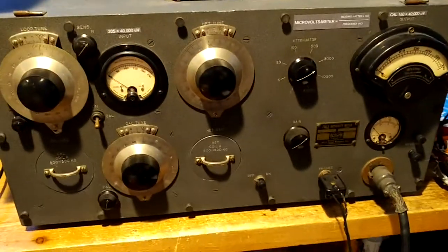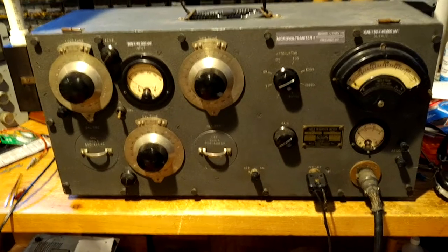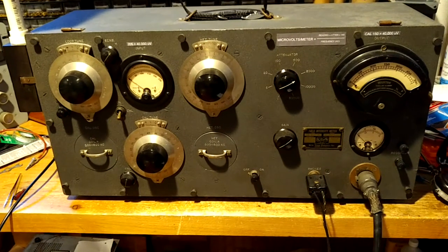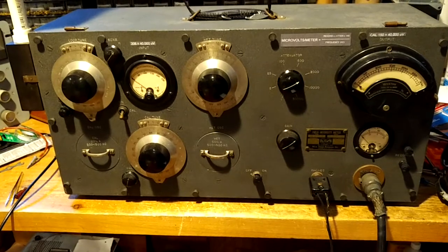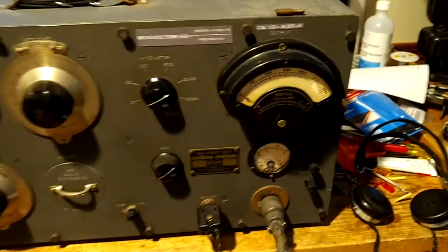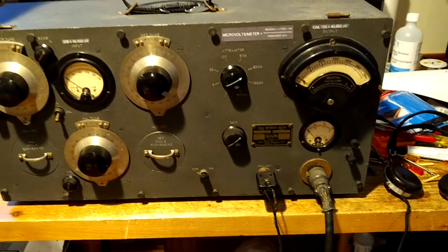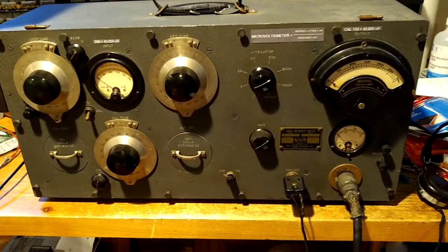The actual unit is a six-tube superheterodyne receiver. The IF frequency is 300 kilocycles, and there's a diode detector and a linear reading output meter that measures the voltage from that detector. There's no automatic gain control. You don't want that.